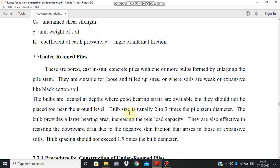The most important point is that bulb size should be usually between 2 to 3 times the pile stem diameter. This is one important point, that it should be between 2 to 3 times the pile stem diameter.